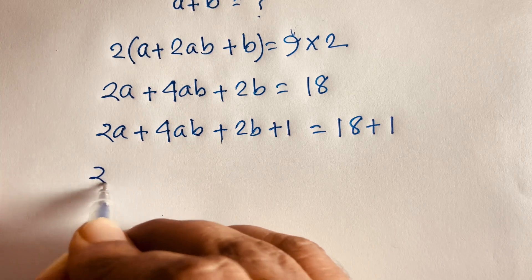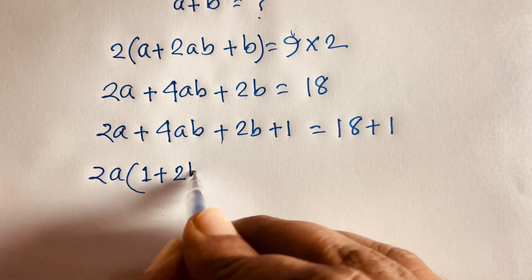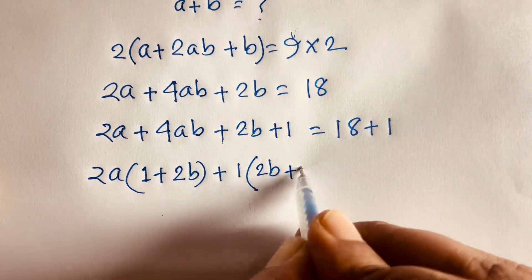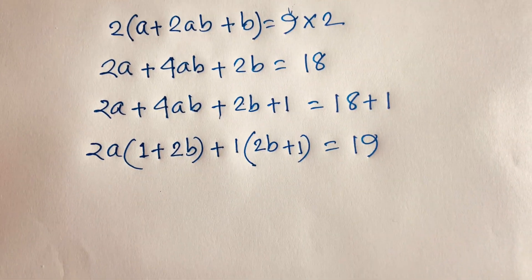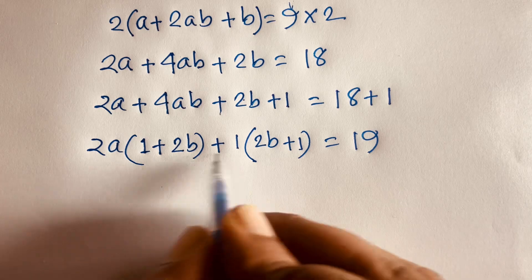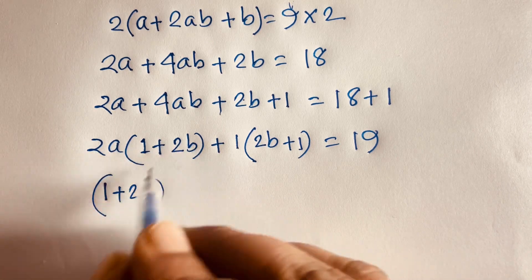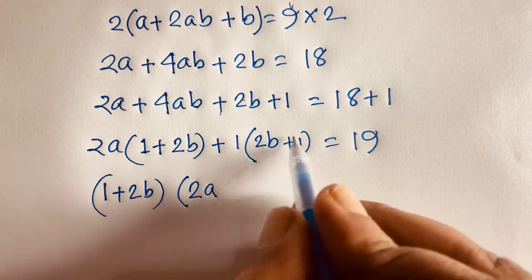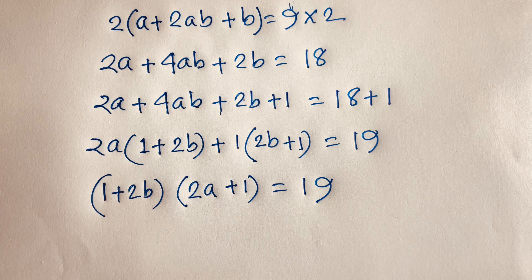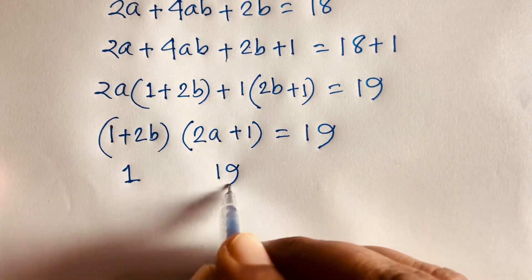Here, 2a is common in some terms, and 1 is common in others, so we can factor. This gives us (1 plus 2b) times (2a plus 1) is equal to 19.